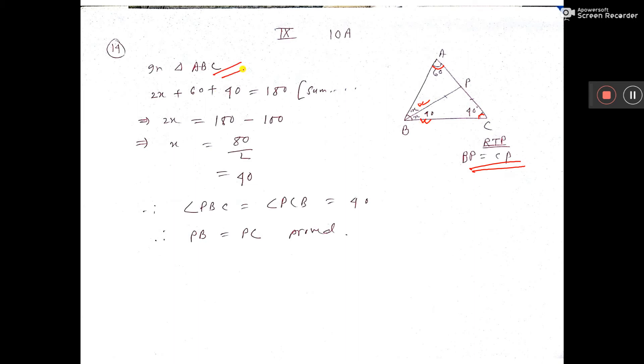So you take triangle ABC. If you add all this angle, it will be 180 degrees. Because sum of the angles of a triangle are 180 degrees. So, 2X plus 60 plus 40, that is 180. Why 2X? Because this angle together is 2X.